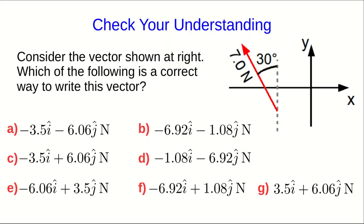Let's check your understanding. Have a look at the diagram, which shows a vector. And it gives you the magnitude of the vector and an angle which tells you which way the vector points. Figure out how to write this vector in component notation.